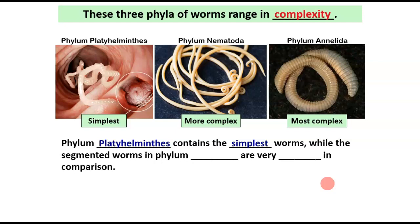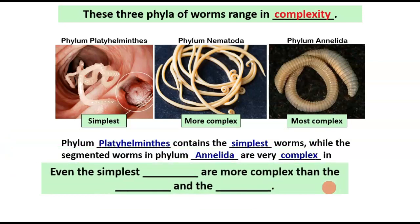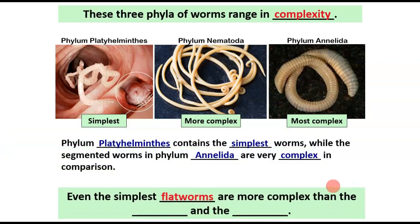So as I was saying, phylum Platyhelminthes contains the simplest worms, while the segmented worms in phylum Annelida are very complex in comparison. But even though I'm saying they're simple, even the simplest flatworms are more complex than cnidarians, and also the sponges, the poriferans. So even though they're fairly simple, they still have some developmental advantages over cnidarians and poriferans.